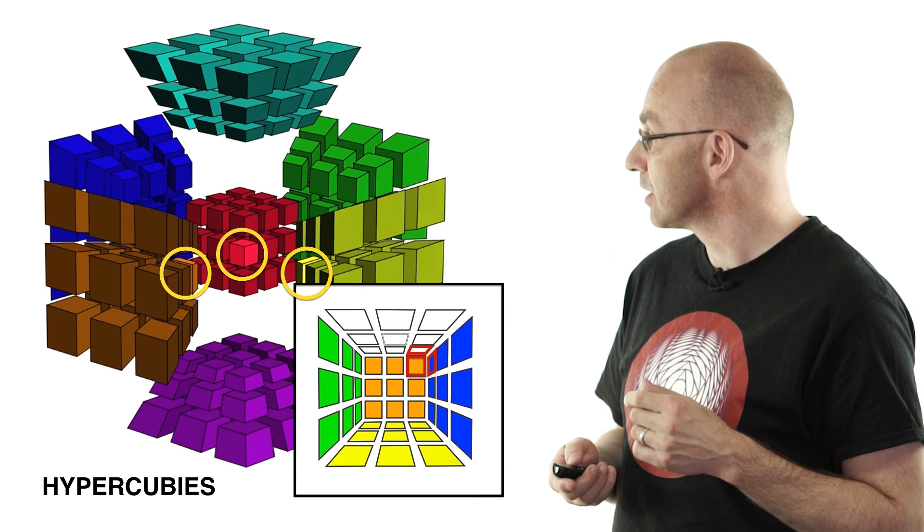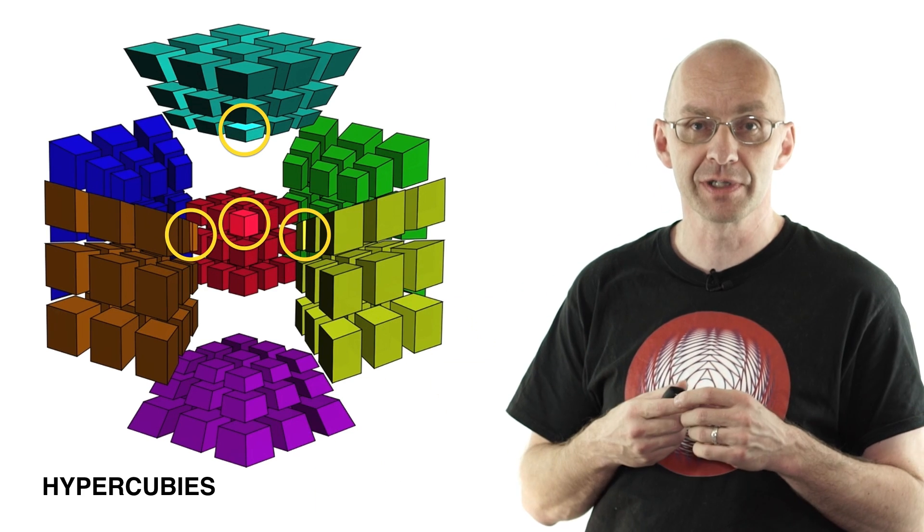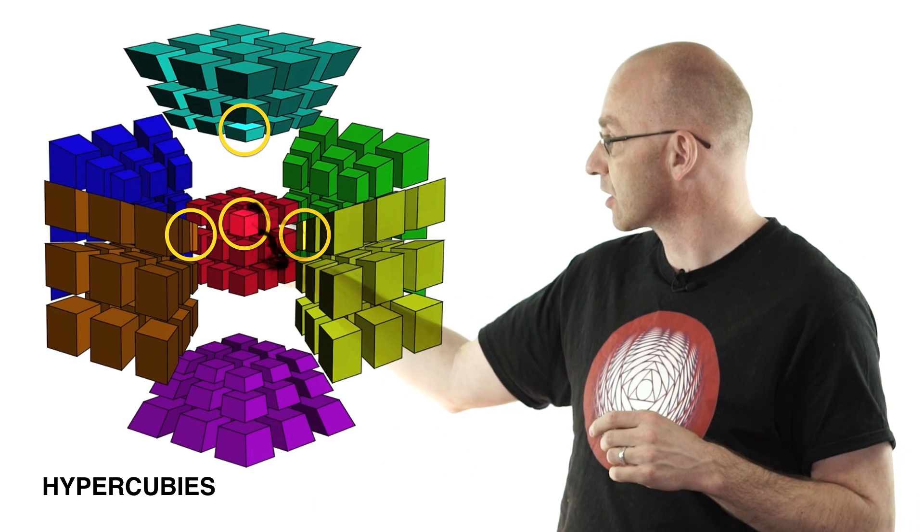And then we've got one more type of hypercubie. These are the corner hypercubies and they have four stickers. And you can see them here highlighted.